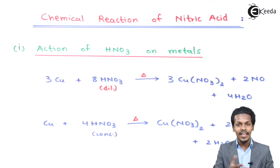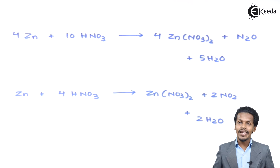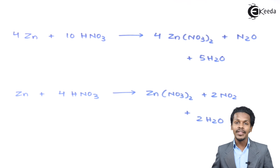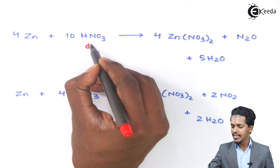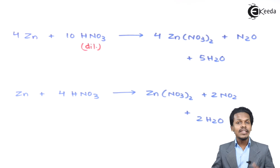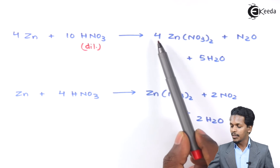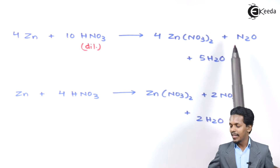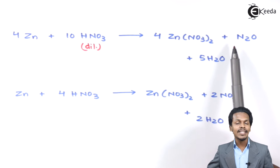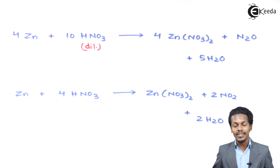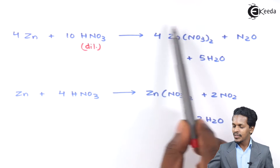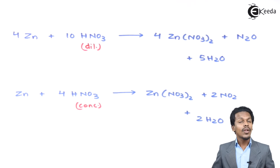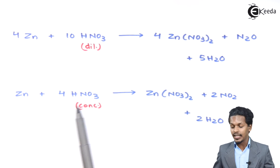Another example is the reaction of nitric acid with zinc. When zinc reacts with dilute nitric acid, the product is four moles of Zn(NO3)2, known as zinc nitrate, along with N2O (nitrous oxide) and five moles of H2O as byproducts.